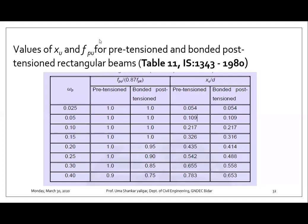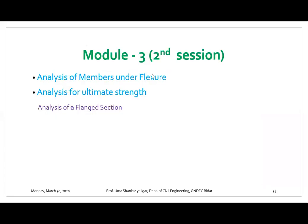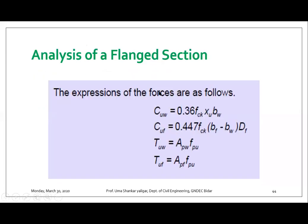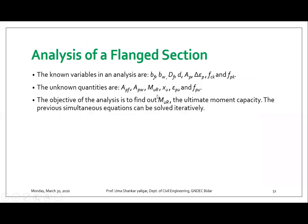Table number 11 is for the pre-tensioned and post-bonded tensioned members, whereas table number 12 is for unbonded members. There are two tables: table number 11 and table number 12. I will show table number 11 and 12 as they appear in the codebook.